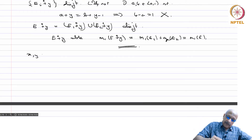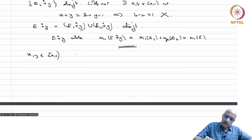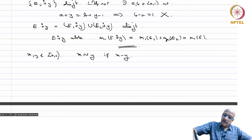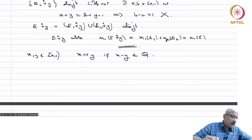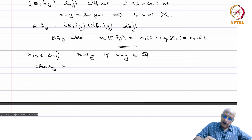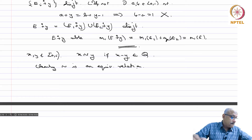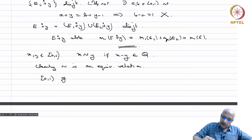Now, if x and y belong to [0,1), we say x is related to y (written x~y) if x minus y is rational. Clearly tilde is an equivalence relation, and [0,1) gets partitioned into equivalence classes.